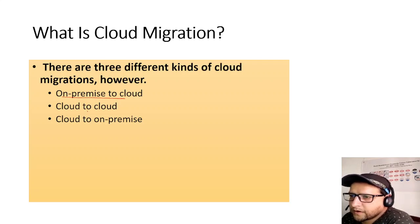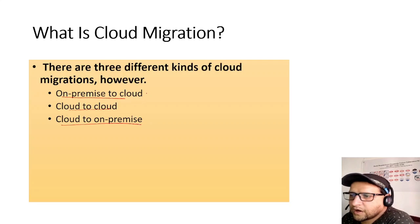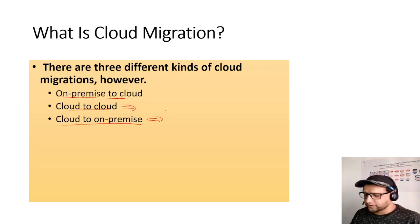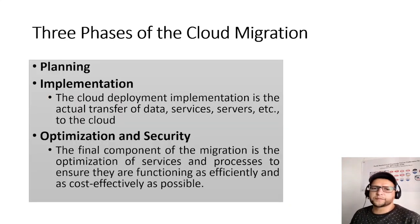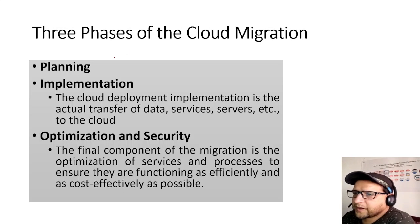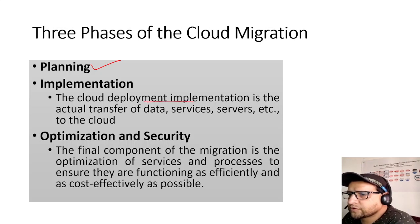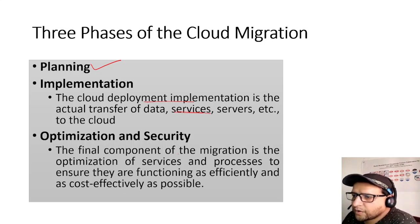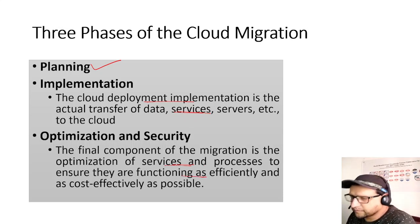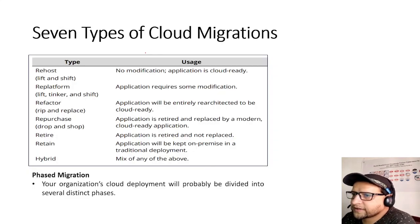Cloud migration types: on-prem to cloud is most common, cloud-to-cloud migration happens when changing providers, and cloud to on-prem may occur if expected advantages weren't realized or if standards require it. Migration phases are: planning, implementation (the actual transfer of data and services to the cloud), and optimization and security — ensuring services function as effectively and cost-effectively as possible.